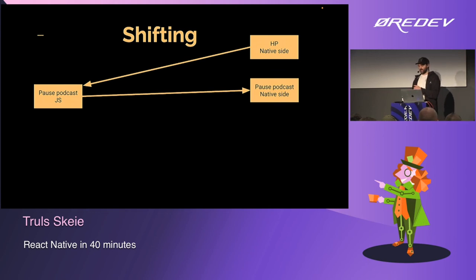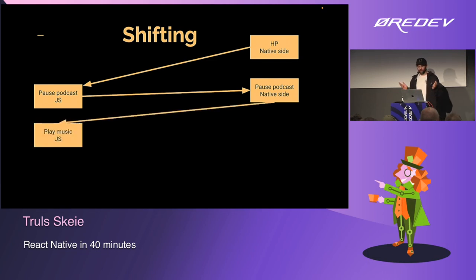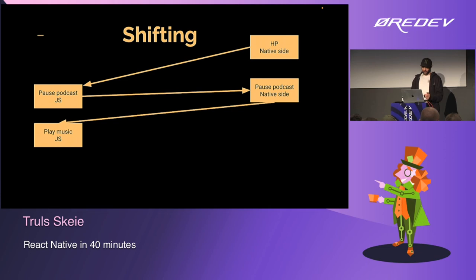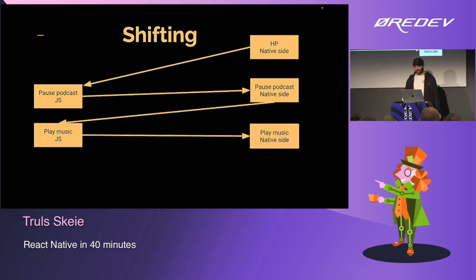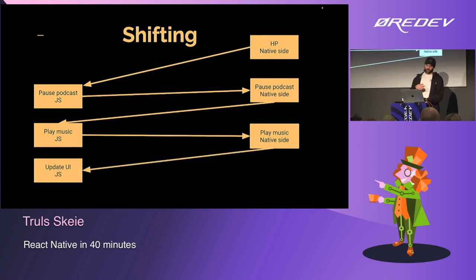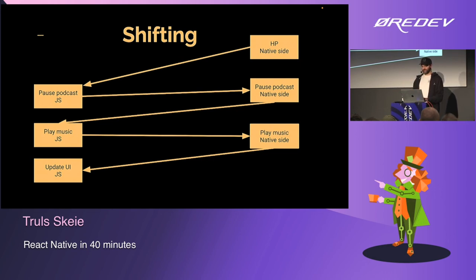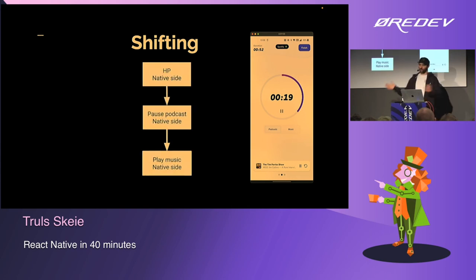So JavaScript has to go to the native side to pause the podcast. Then the native side tells JavaScript it's paused. Then JavaScript tells the native side to play music. And when that's done, it goes back to JavaScript to update the UI. There are quite a lot of redundant steps going back and forth. So essentially what we did was remove everything on the JavaScript side and implement everything on the native side.